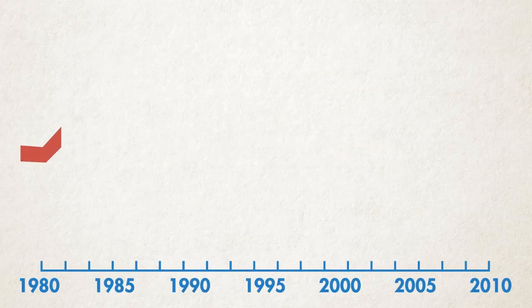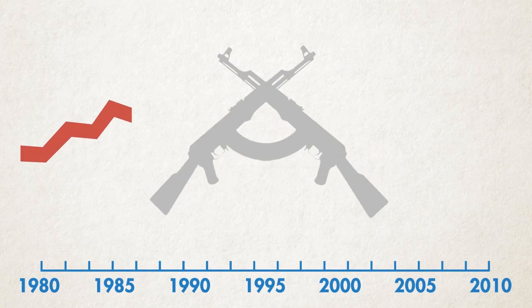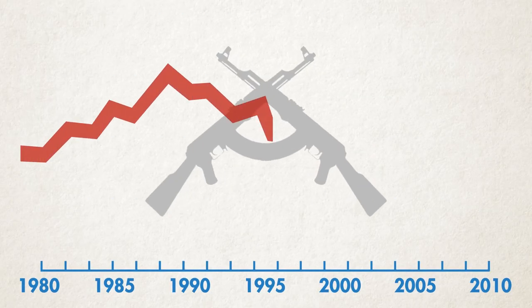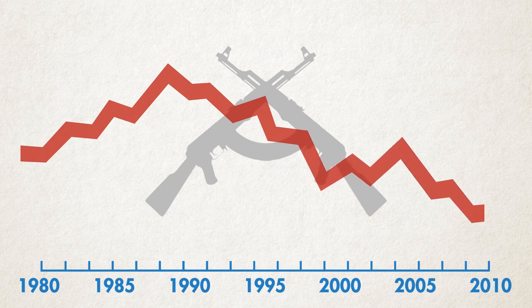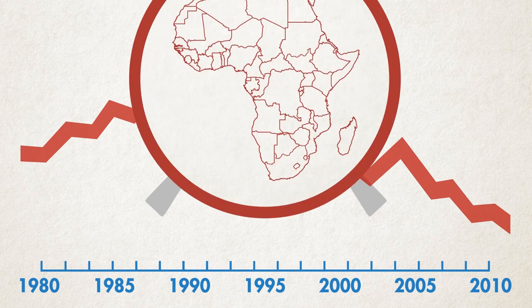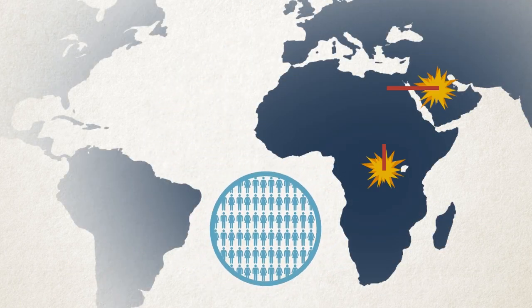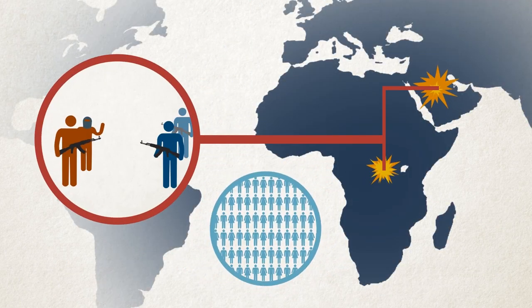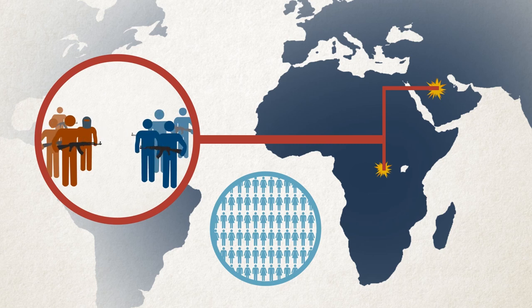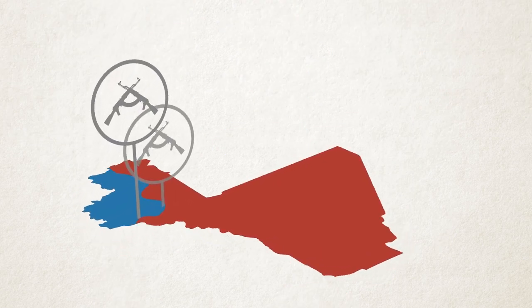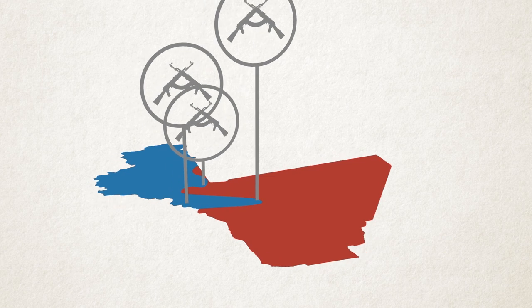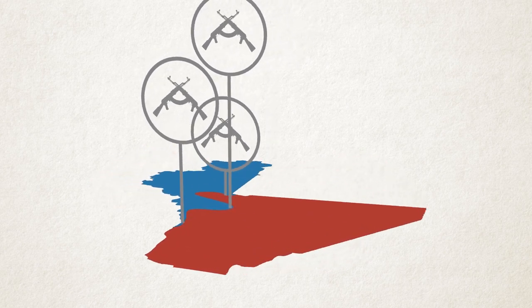For a decade after the end of the Cold War, the world experienced a dramatic decline in the incidence and deadliness of armed conflict, particularly in Africa. If we take population size into account, Sub-Saharan Africa and the Middle East carry the largest conflict burden. Most of this violence occurs within and not between countries.